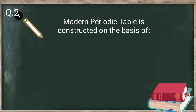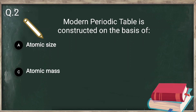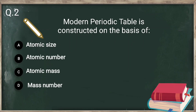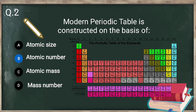The second question is: the modern periodic table is constructed on the basis of — atomic size, atomic number, atomic mass, or mass number? The answer is atomic number. The basic difference between Mendeleev's and modern periodic table is that Mendeleev's is based on atomic mass, while the modern periodic table is based on atomic number — elements are arranged according to increasing atomic number.